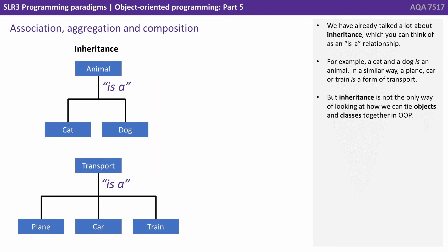We've already talked a lot about inheritance, which you can think of as an 'is a' relationship. For example, a cat and a dog is an animal. In a similar way, a plane, car or train is a form of transport.